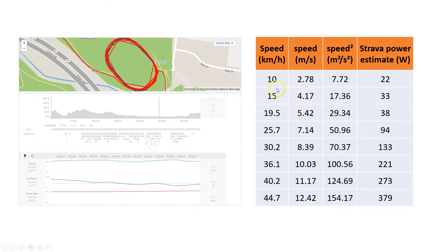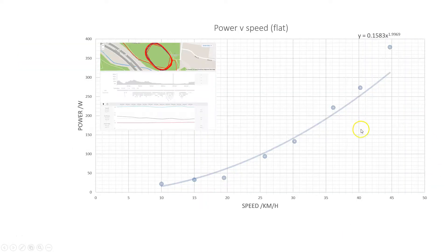So you can see at higher speeds Strava estimates my power as greater but it's certainly not linear. Well I just did an analysis of this data in Excel and you can see a graph of speed in kilometers an hour against power is a nice curve.